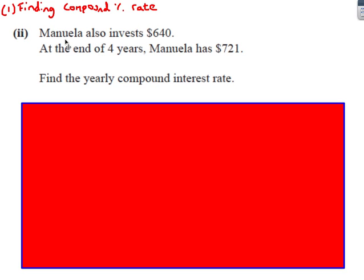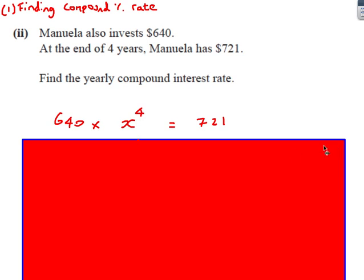So here we go. Here's a question. We've got Manuela, who invests $640. At the end of four years, Manuela has $721, and this time we've got to find the compound interest rate. Okay, so the best way to do this one is to actually set up some kind of equation. So I start with $640. We've got X, which I don't know. That's going to involve the interest rate, and it's going to be for four years. And I know at the end of that time, I have $721.